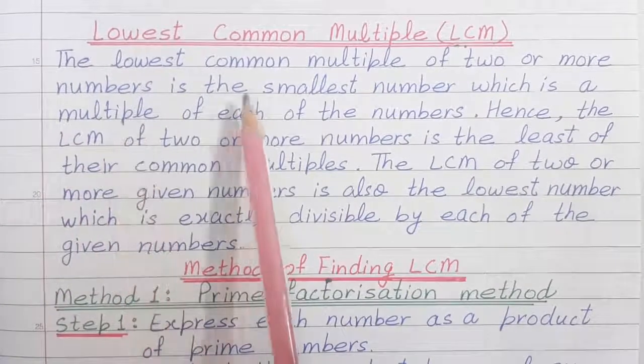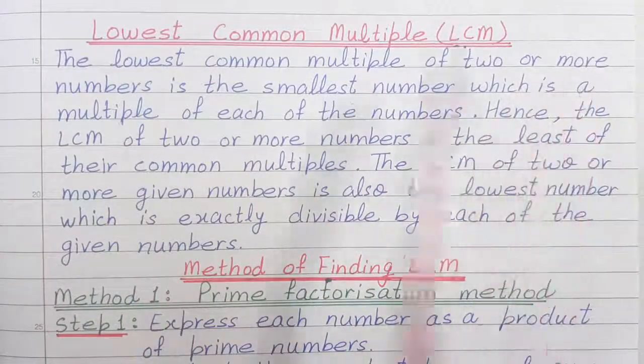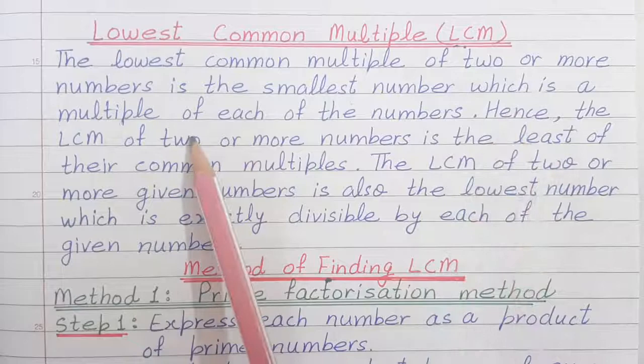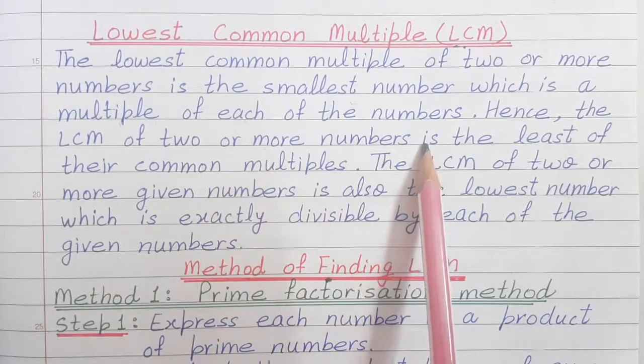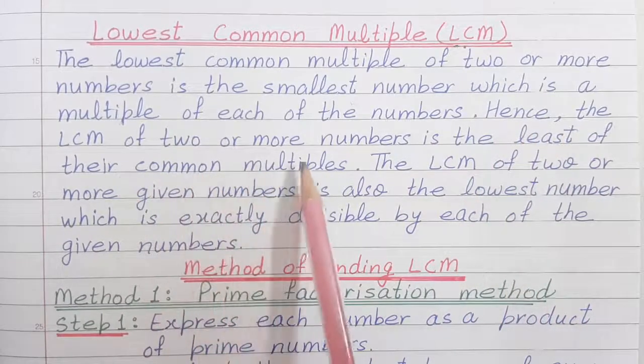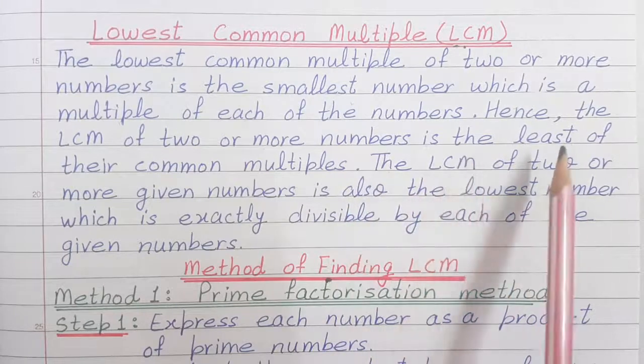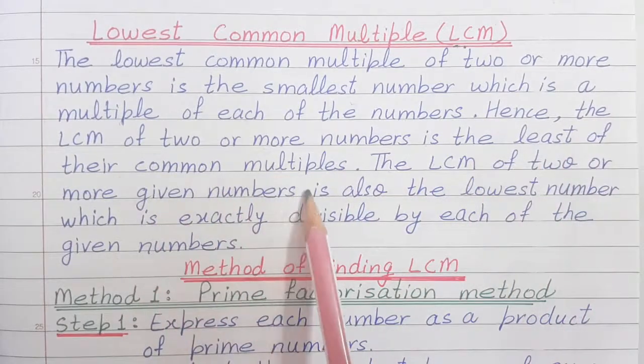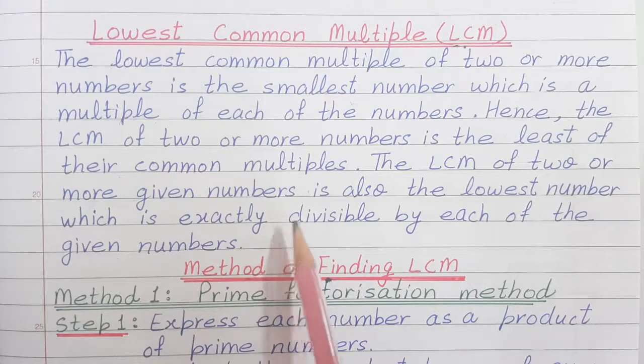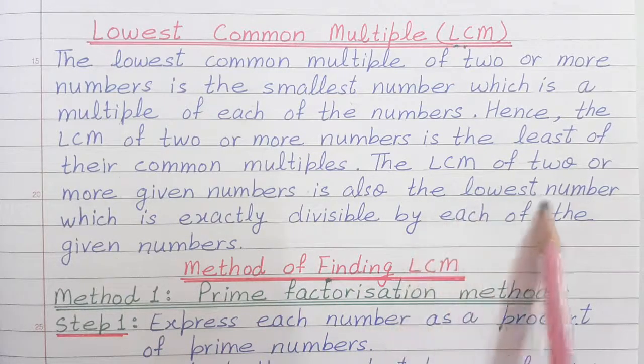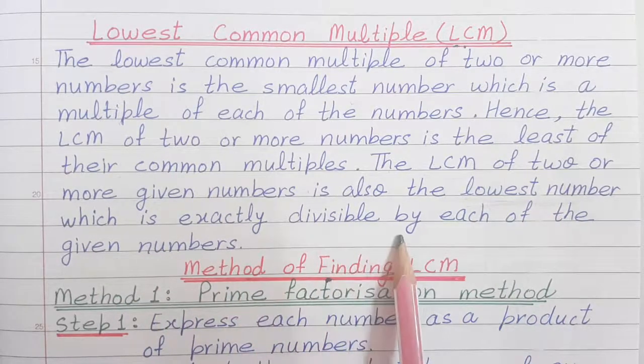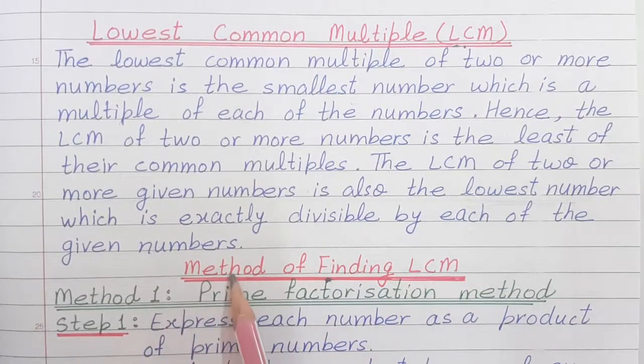The Lowest Common Multiple of 2 or more numbers is the smallest number which is a multiple of each of the numbers. Hence, the LCM of 2 or more numbers is the least of their common multiples. The LCM of 2 or more given numbers is also the lowest number which is exactly divisible by each of the given numbers.